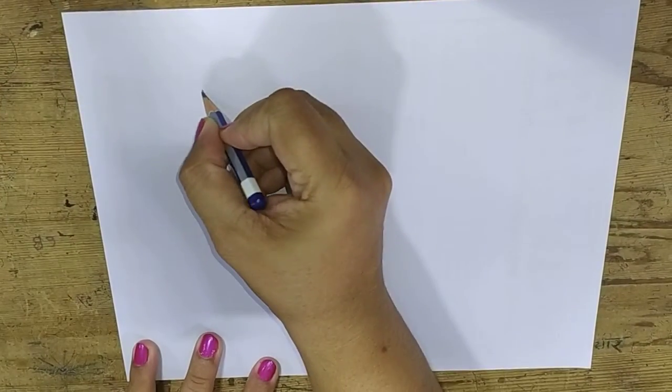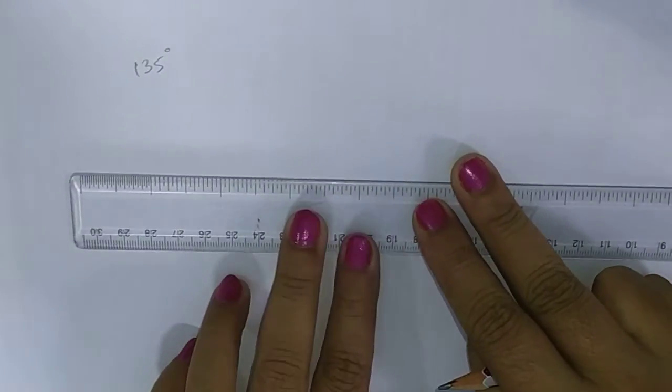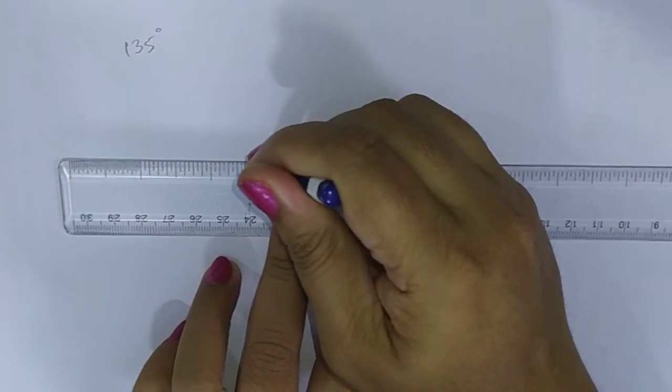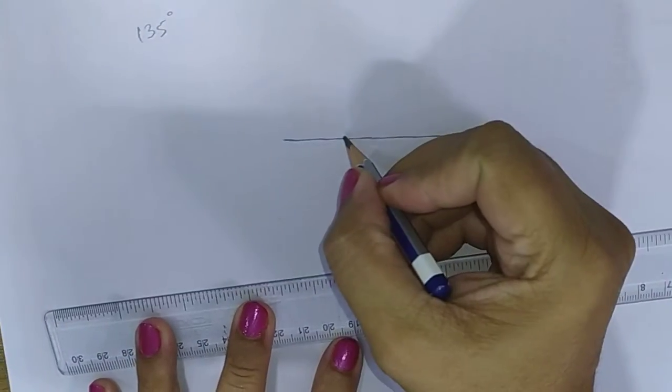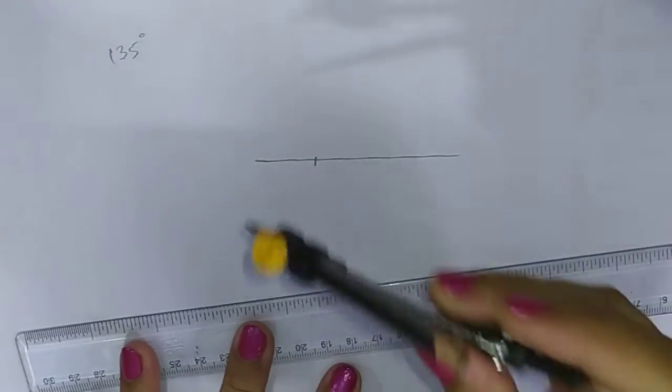Now let us study how to construct the angle of 135 degrees. For that, first you just have to draw a straight line. The straight line will be your one of the arm. This will be your midpoint.